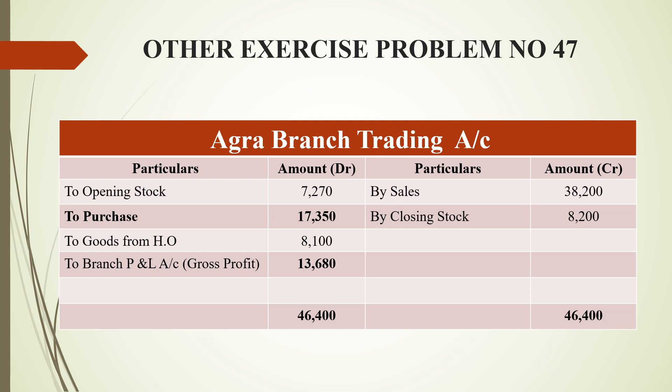As we prepare the trading account, opening stock goes on the debit side. Opening stock is 7,270 rupees and purchases are 17,350 rupees. Goods from head office — since these goods are going out from the head office — go on the debit side at 8,100 rupees. On the credit side, sales are 38,200 rupees and closing stock is 8,200 rupees.